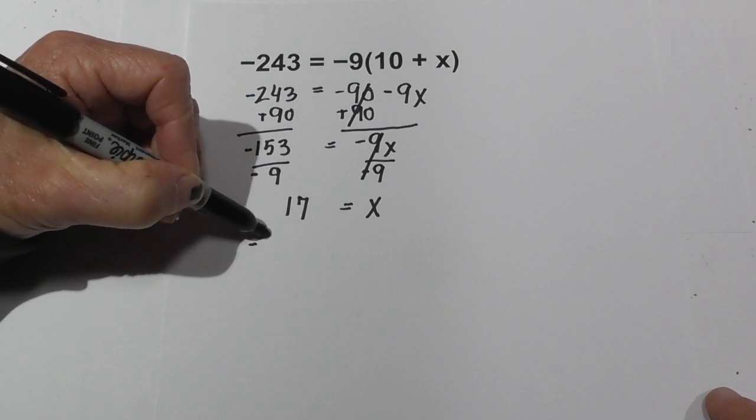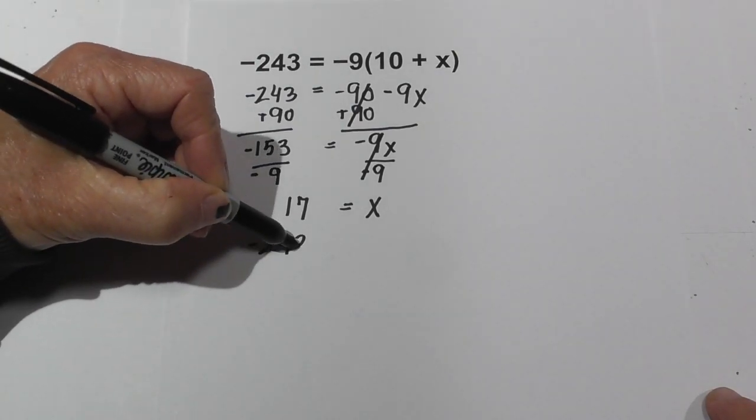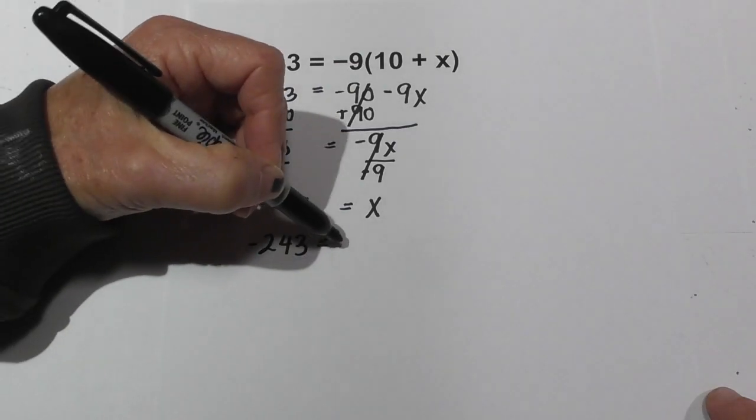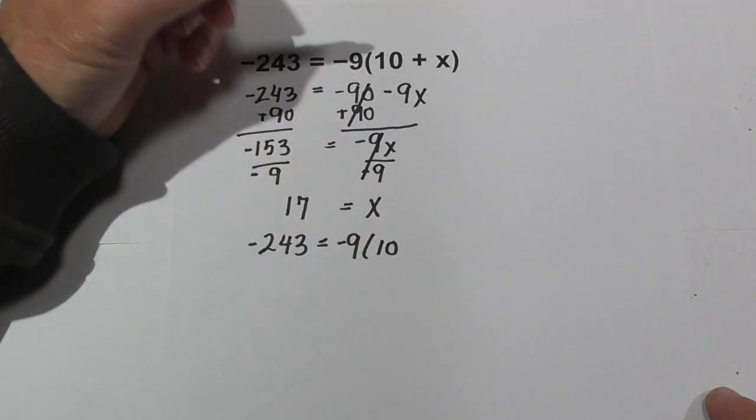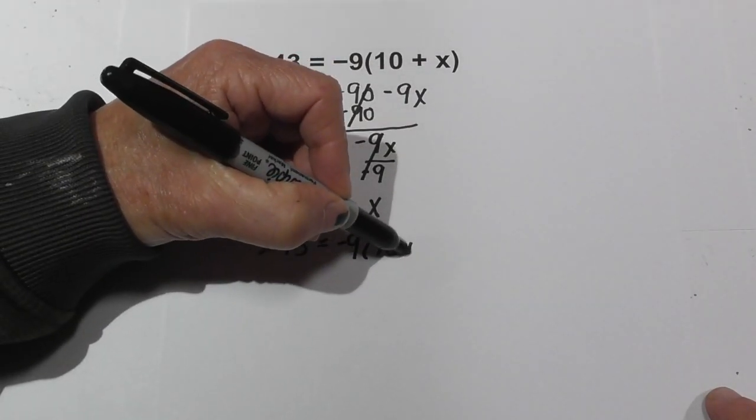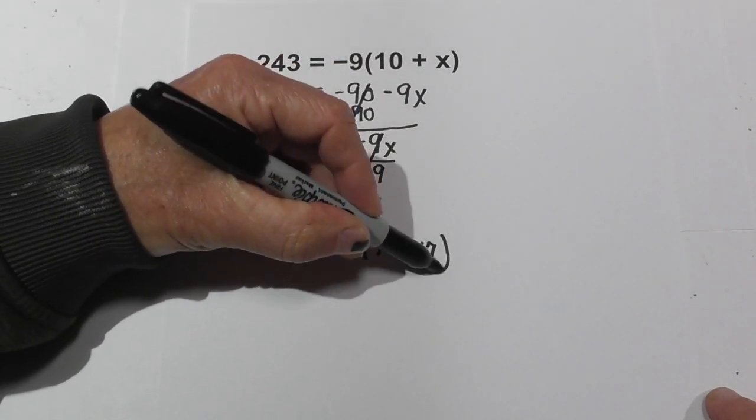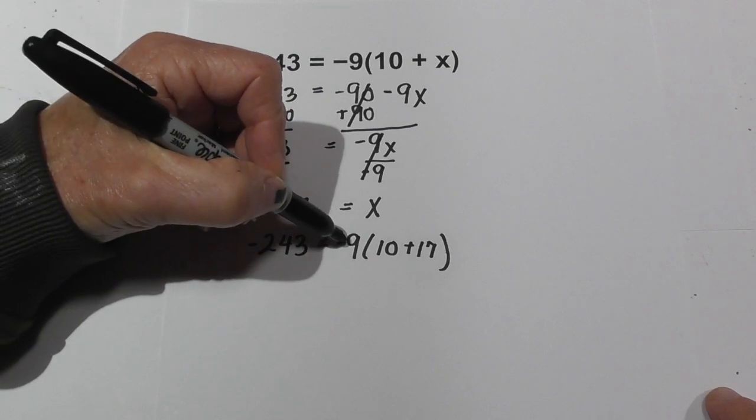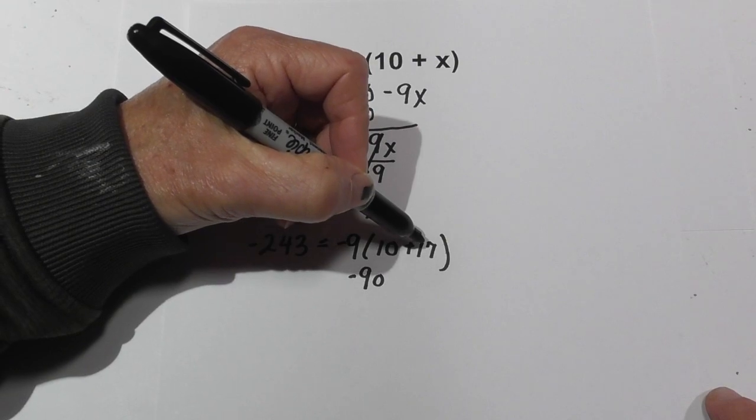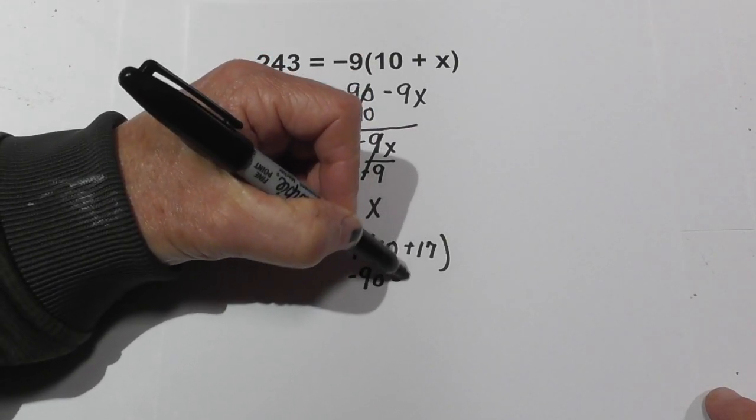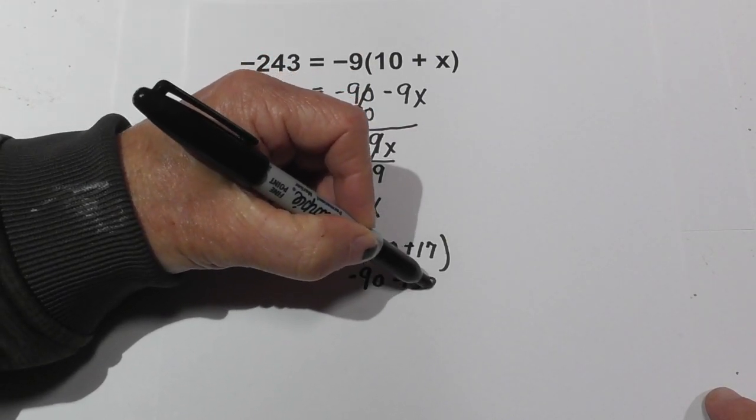Now let's plug it into the original formula and check our work. Negative 243 equals negative 9 times 10. And let's plug in our x which is a 17. Now we have negative 9 times 10 is negative 90.